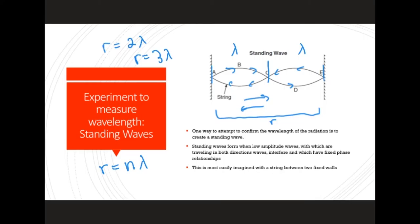If we were to track the nodes of only one of the strings, we would say that this distance r is equal to n over two wavelengths, because it's halfway between one of the wavelengths for one of the strings. This relation will later be used to help determine the wavelength of an incident microwave.